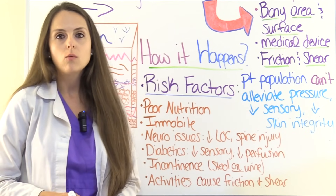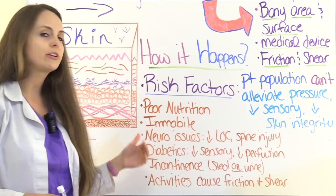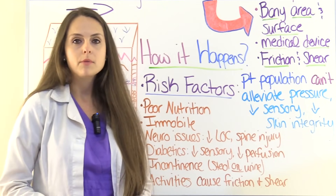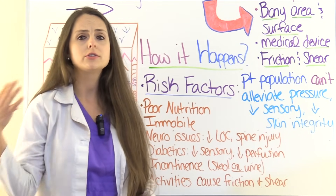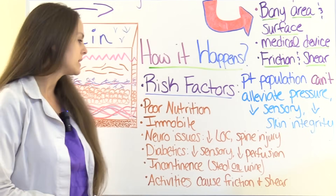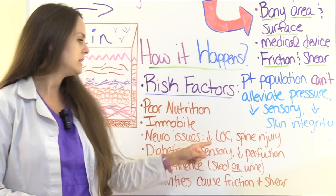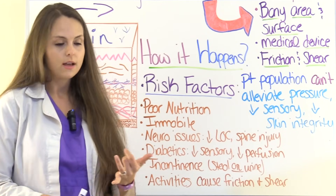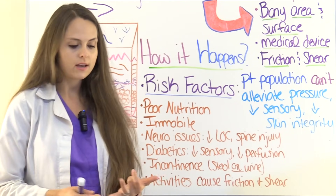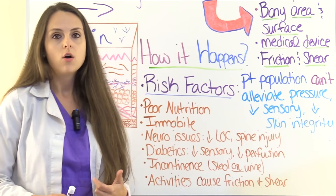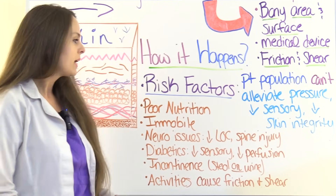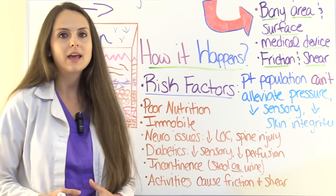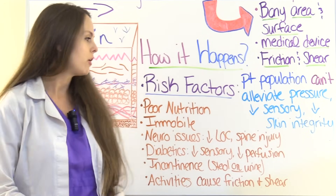Poor nutrition is a huge risk for developing a pressure injury — look out for low weights and low body mass indexes, because those decrease skin integrity. If the patient is immobile, confined to bed and unable to get up and walk, they require turning every two hours. They're definitely at risk. Also, any type of neurological issue causing decreased level of consciousness — whether from sedation, abnormal labs, or simply altered awareness — as well as spinal injuries like quadriplegia where they cannot feel pressure and shift their own weight.